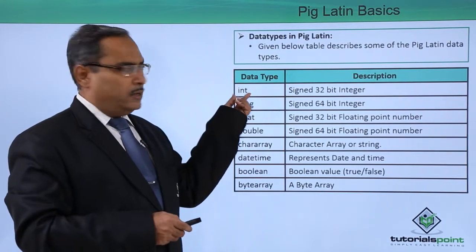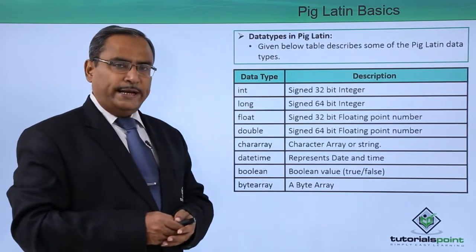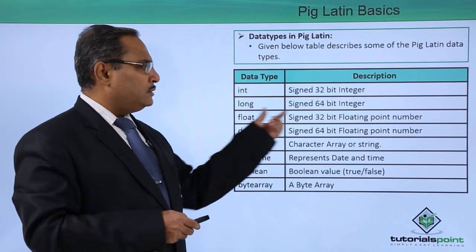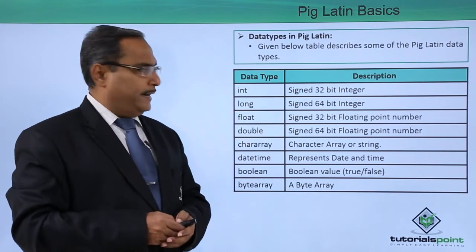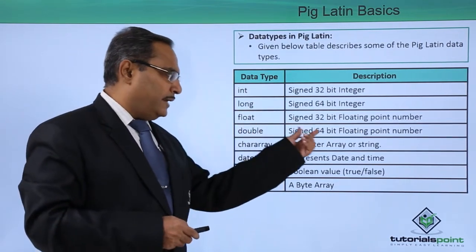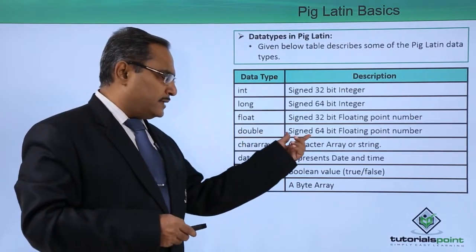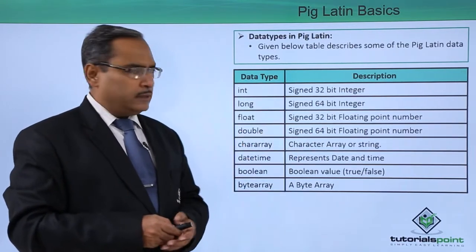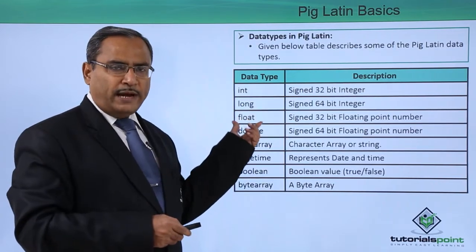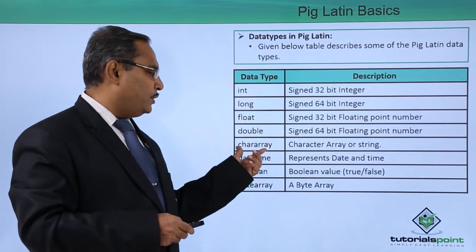We have int, which is a signed 32-bit integer. We have long, a signed 64-bit integer. We have float, a signed 32-bit floating point number. We have double, a signed 64-bit floating point number. Int and float occupy 4 bytes, while long and double occupy 8 bytes in memory.